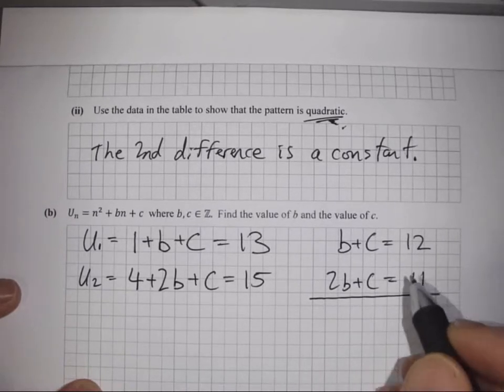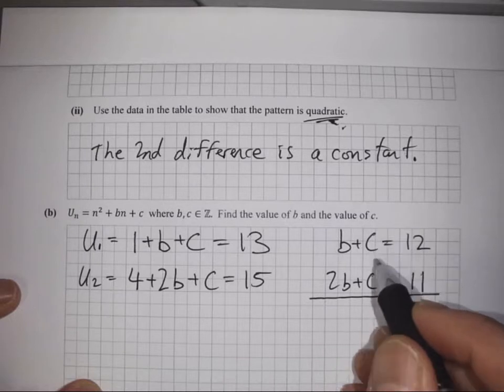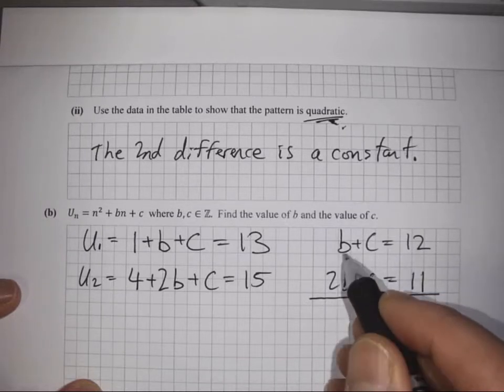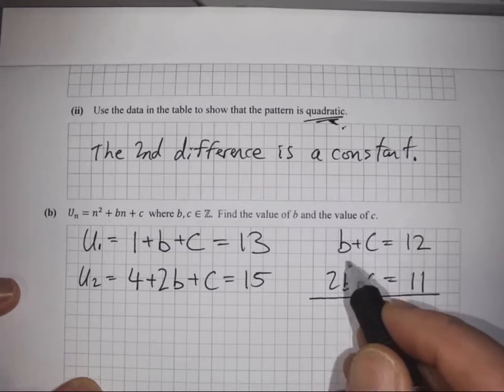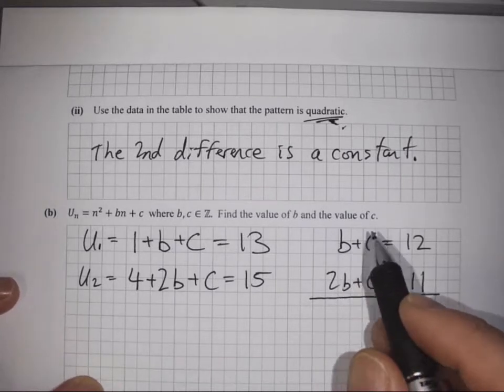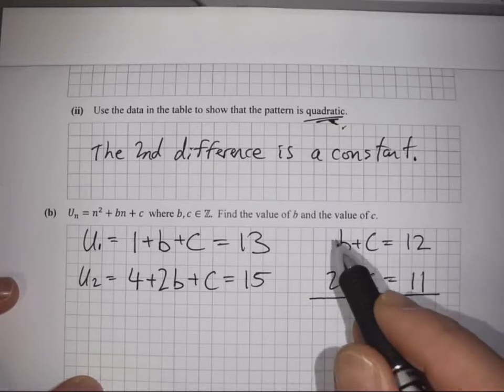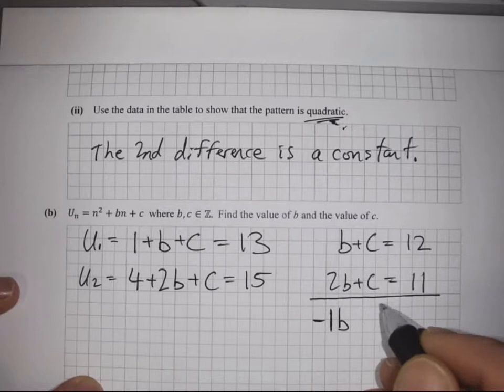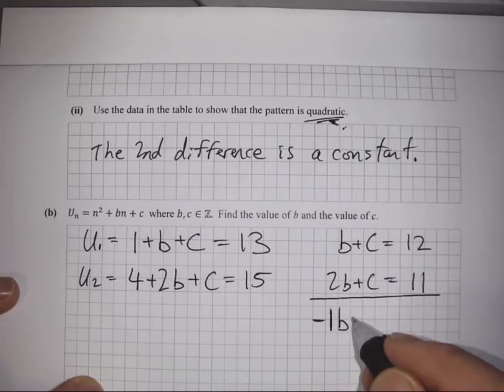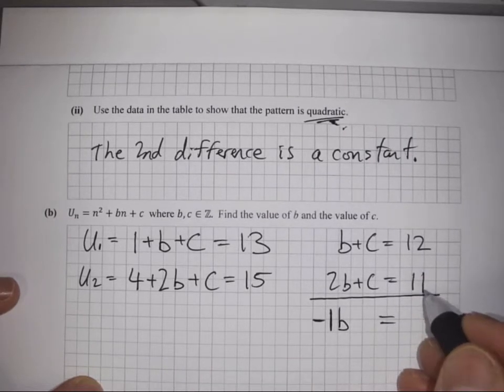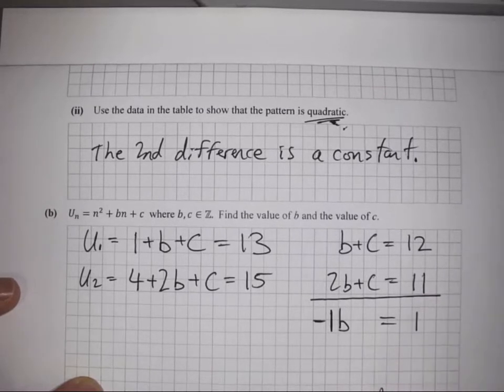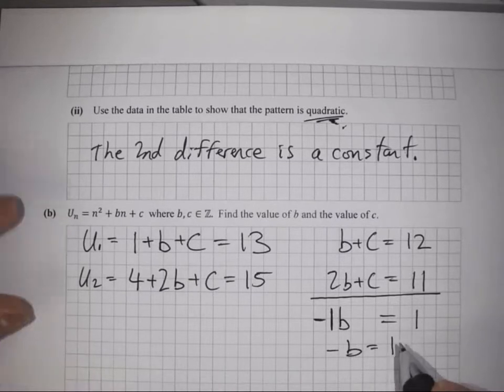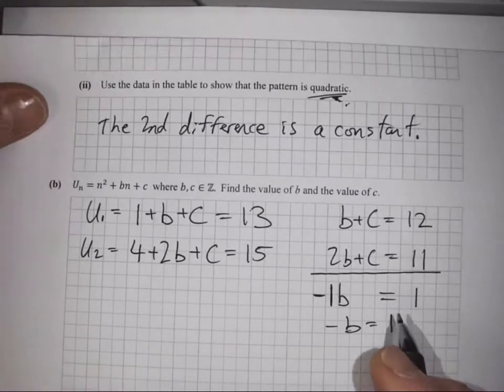Now we can subtract the bottom equation from the top. b minus 2b is -1b, c take away c is nothing, and 12 take away 11 is 1. So -b equals 1.